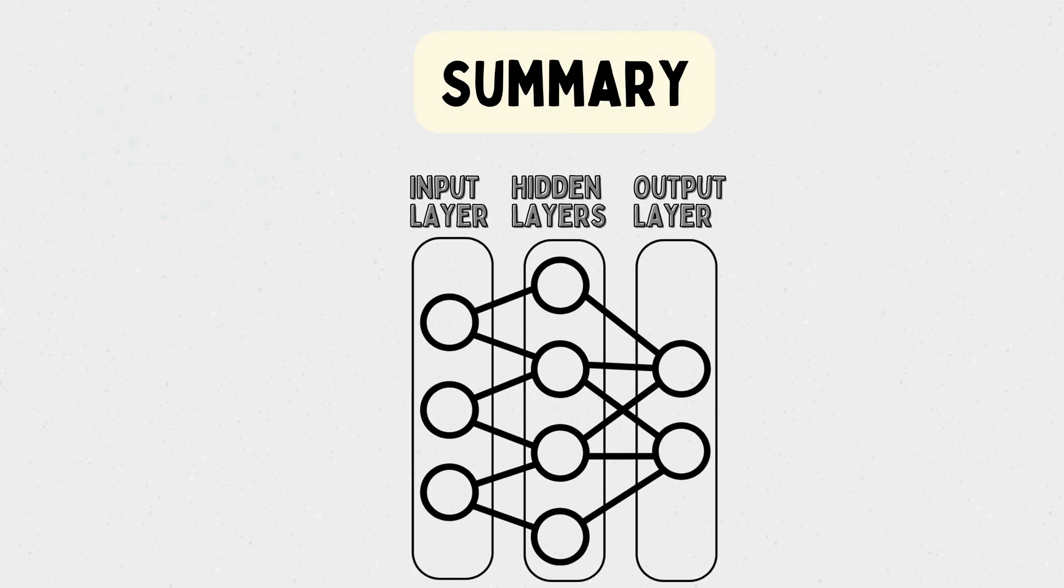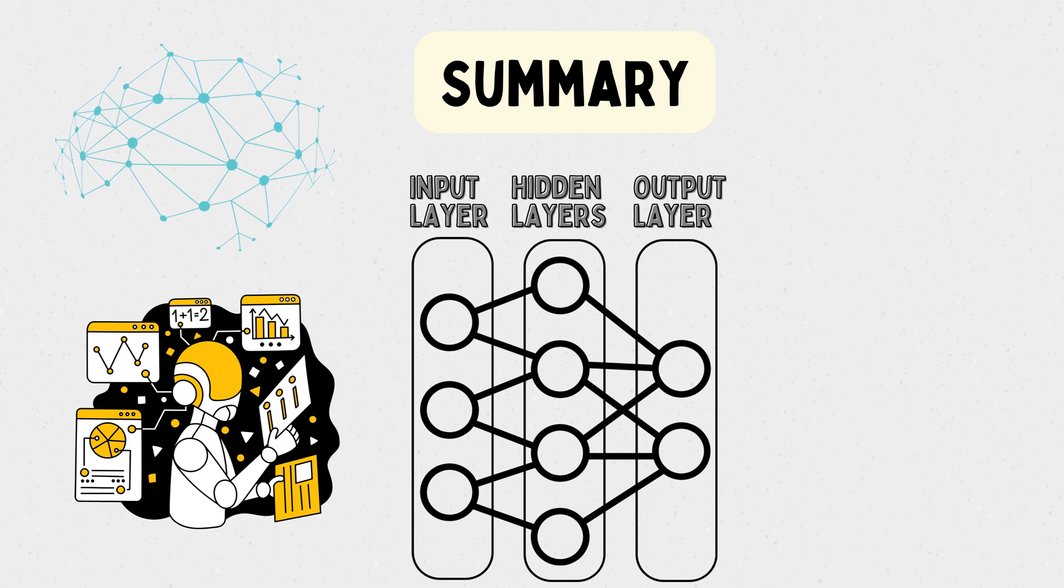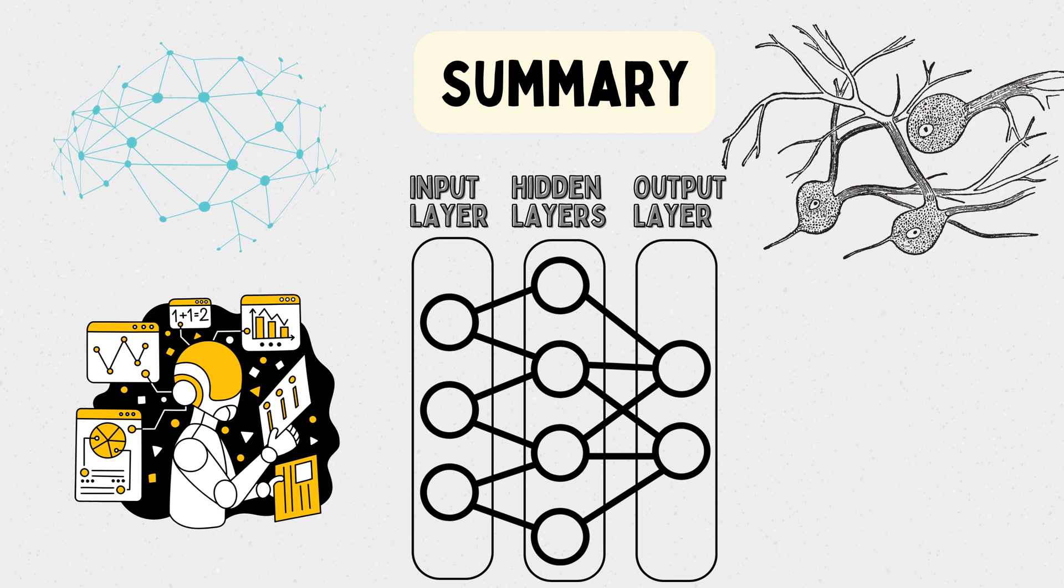In summary, neural networks are the fundamental building blocks of artificial intelligence and machine learning. They simulate the way our brains process information through interconnected artificial neurons, enabling them to learn from data and make predictions.